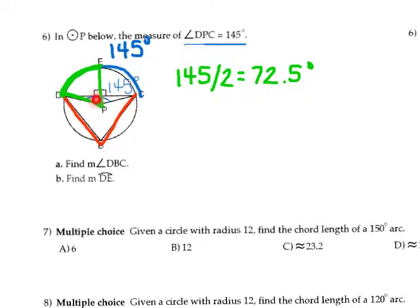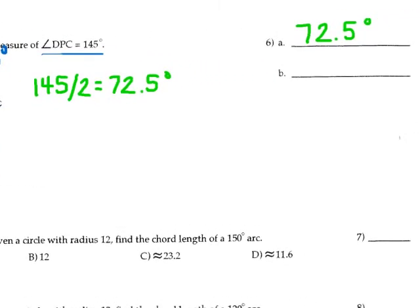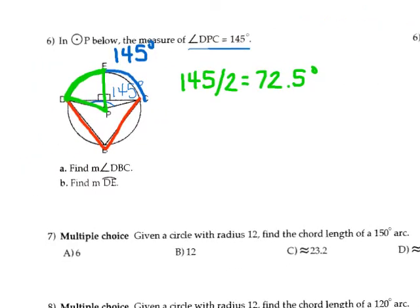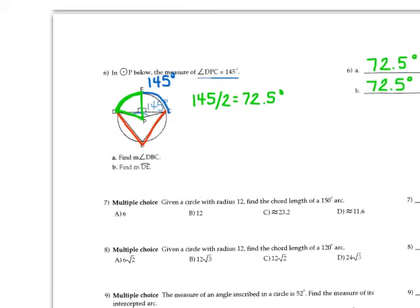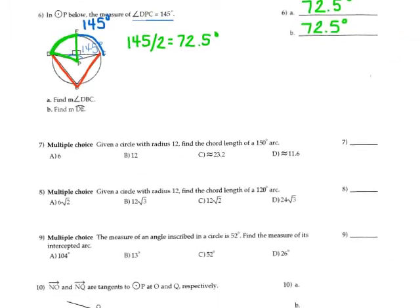And so, that means this little angle here is 72.5, which means that this would be 72.5. So, for my answer for part B, I would just also say 72.5. And again, that's because it's half of that central angle. And with a lot of these, there's probably other ways that you came up with to do them. As long as you got the same answer, you're totally fine. There are more than one way to do a lot of these problems.